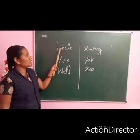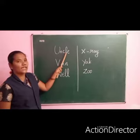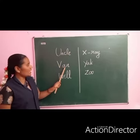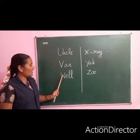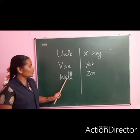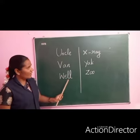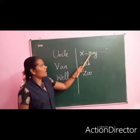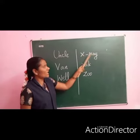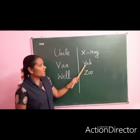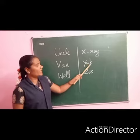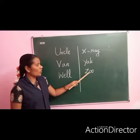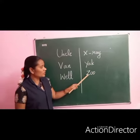Uncle — U, N, C, L, E. Uncle. Van — V, A, N. Van. Will — W, E, L, L. Will. X-ray — X, R, A, Y. X-ray. Yak — Y, A, K. Yak. Zoo — Z, O, O. Zoo.